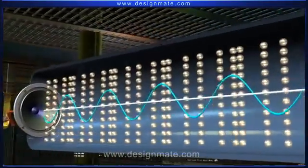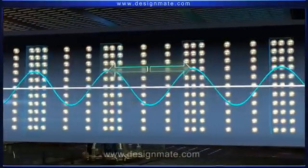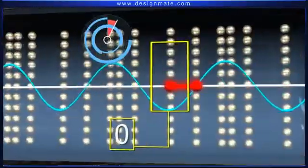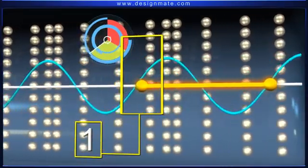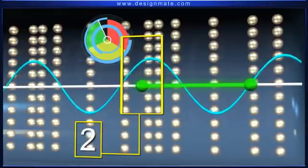Wavelength is the distance between two consecutive compressions or rarefactions. The number of waves passing through a point in a second is called frequency, and it is measured in Hertz.